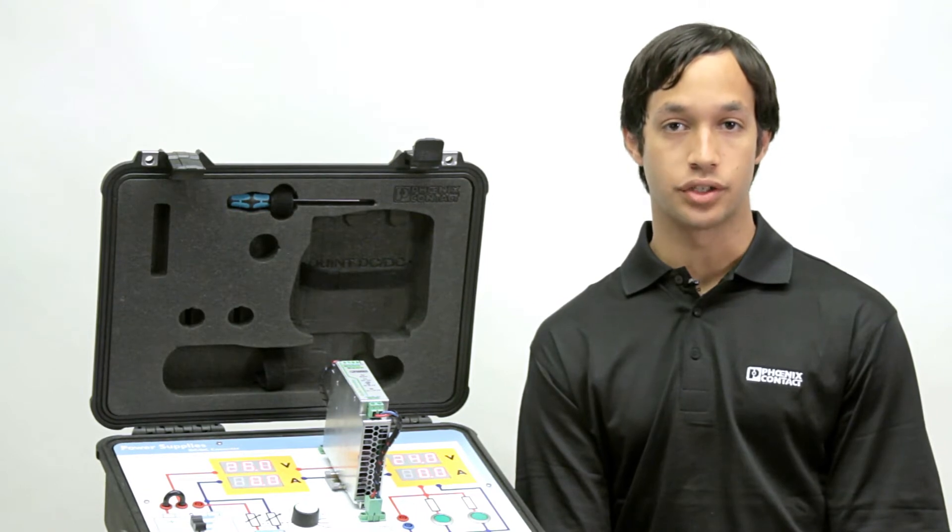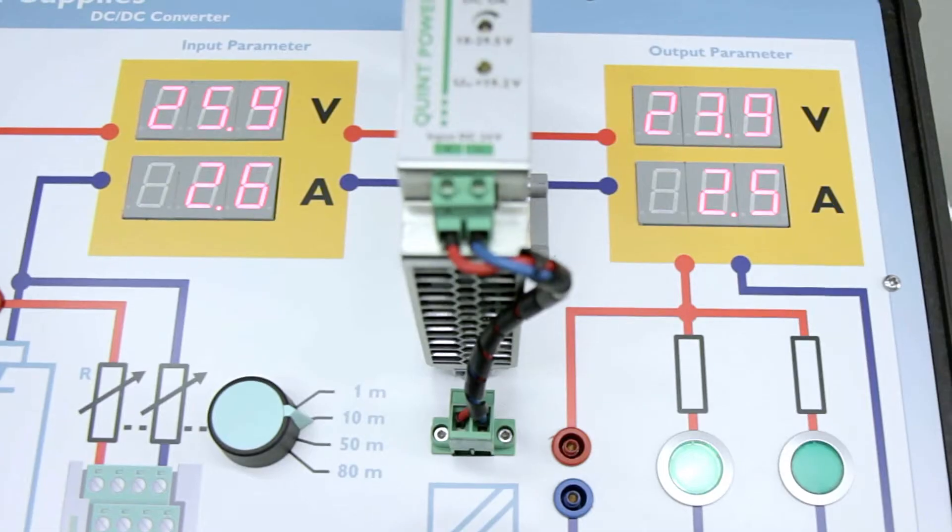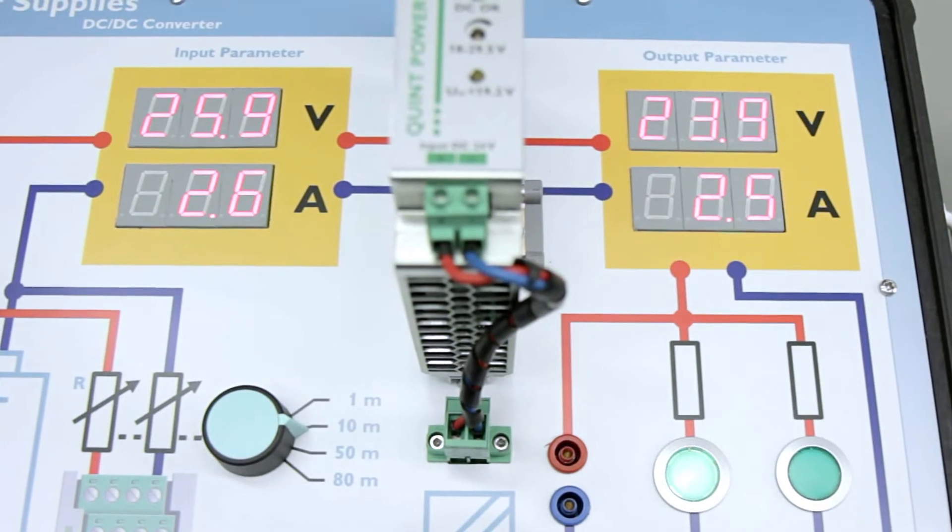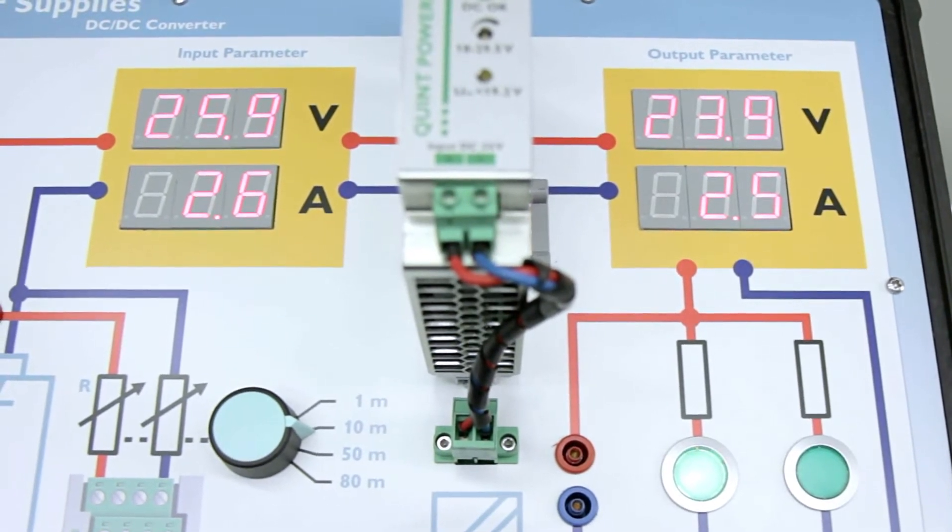When the battery is fully charged, the voltage is 26 volts. The DC to DC regulates this voltage and ensures that the output remains constant 24 volts.